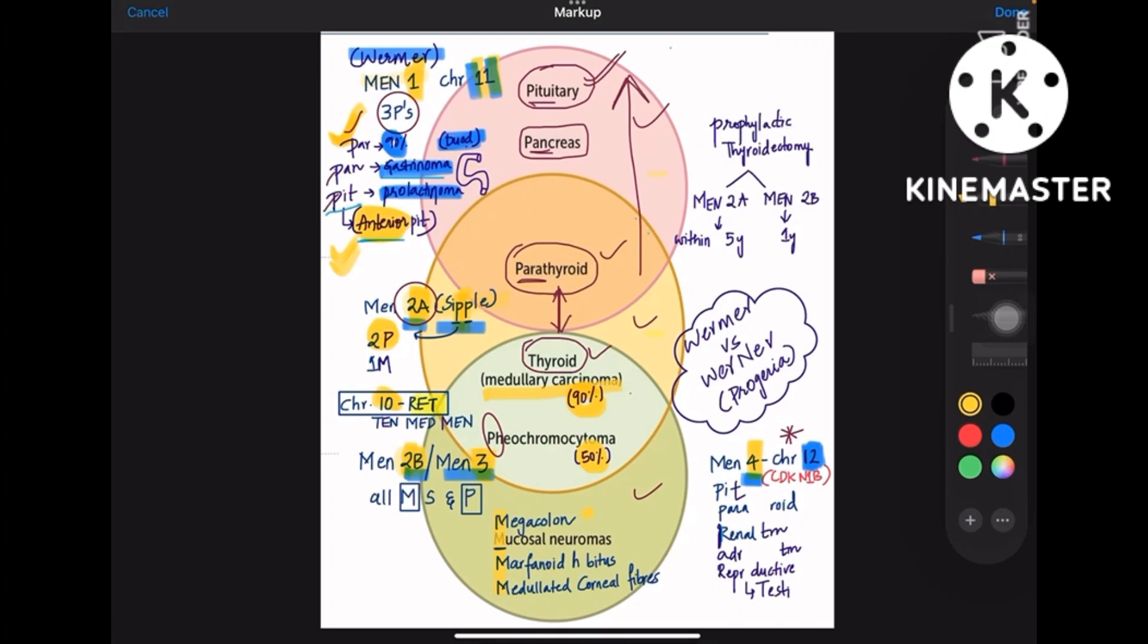Now coming to 2B, 2B is all about M's guys. So megacolon, mucosal neuromas, medullated corneal fibers, Marfanoid habitus. Everything is about M's in MEN2B or MEN3. All M's and one P, that one P is pheochromocytoma.